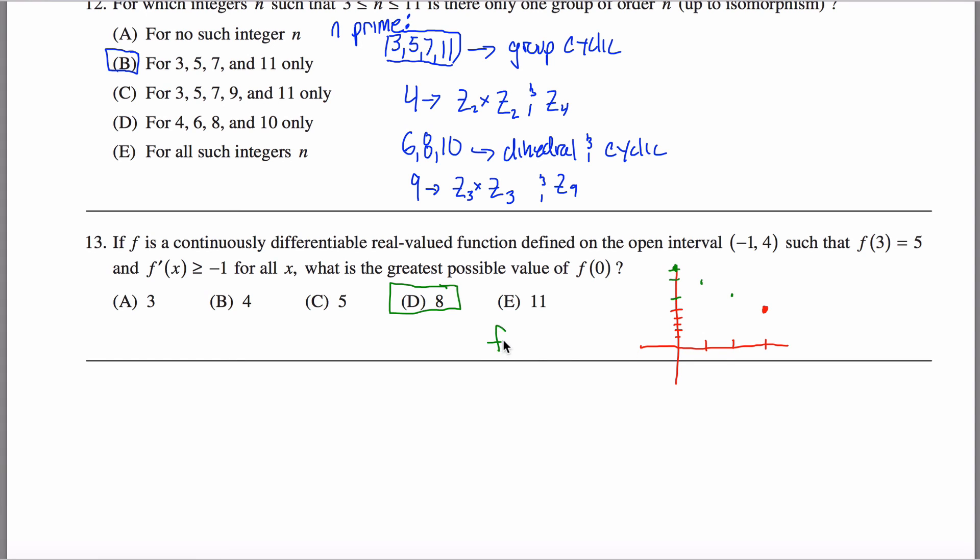So f of zero would be less than or equal to eight. So when it asks me what's the greatest possible value, the answer would be eight.